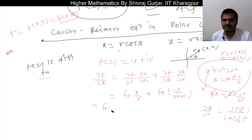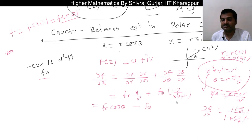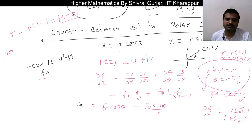Now substituting polar form: x = r cos θ, so x/r = cos θ, and y = r sin θ, so −y/(x² + y²) = −sin θ/r. Therefore ∂f/∂x = f_r cos θ − f_θ sin θ/r. Similarly we can get ∂f/∂y.